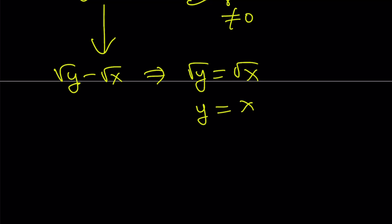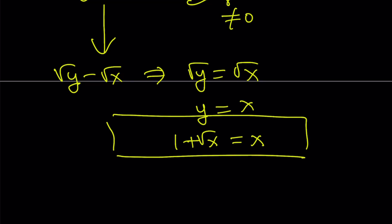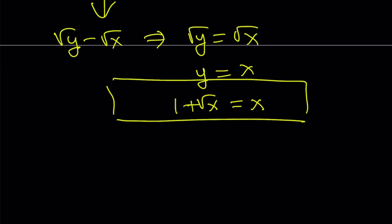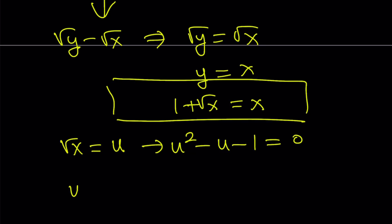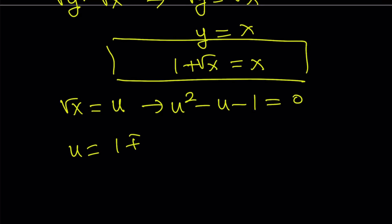What does y equal x mean? Well, y is equal to 1 plus square root of x. So I get this single variable equation again. To solve it, suppose square root of x equals u. From here we get u squared minus u minus 1 equals 0. As you know, the solutions to this equation are given by (1 plus or minus square root of 5) divided by 2. This is where we get the golden flavor.